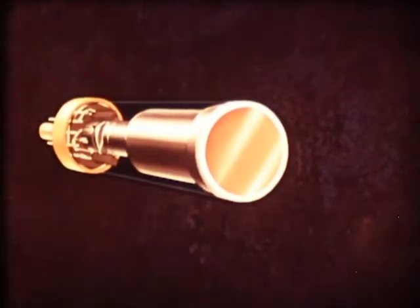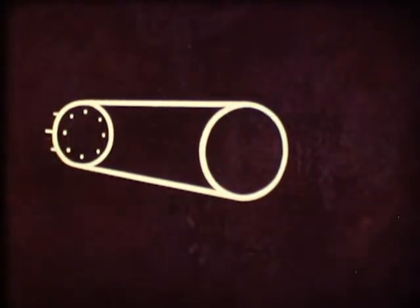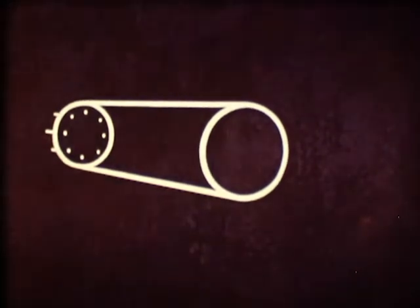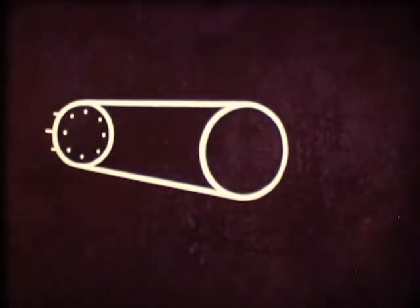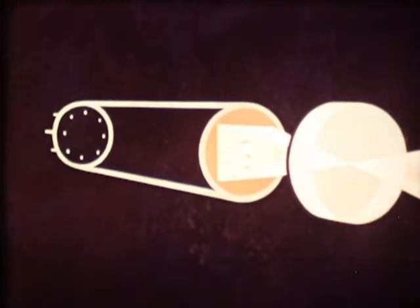The various parts of this camera tube are contained within an evacuated glass envelope of between 10 to 20 centimeters in length. At the front of the tube is a photosensitive signal plate, onto which the image to be transmitted is projected.